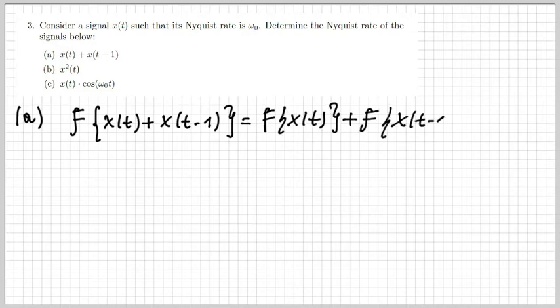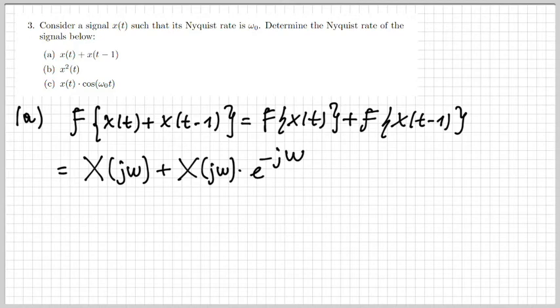Let's start with case a, where the signal is x(t) + x(t-1). To determine the Nyquist rate I need to find the bandwidth, so I start by calculating the Fourier transform. By linearity, that's simply the sum of two Fourier transforms. Recalling that a time shift corresponds to multiplication by a complex exponential in the frequency domain, the Fourier transform is X(jω) + X(jω)·e^{-jω}.